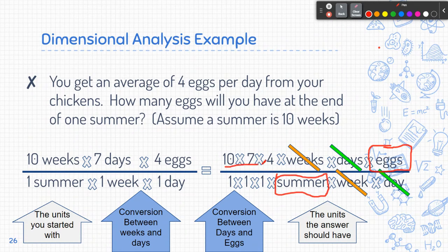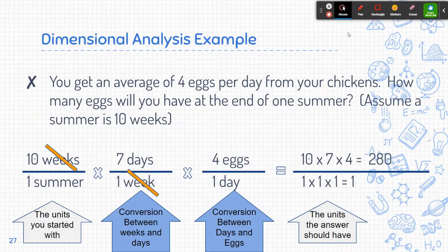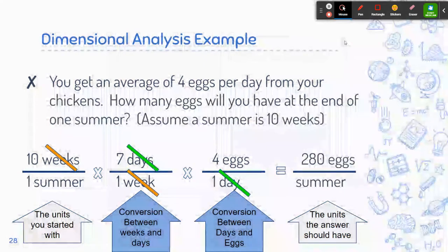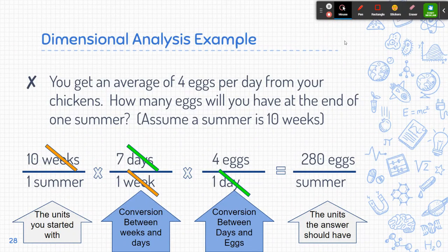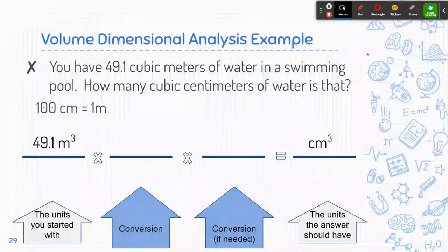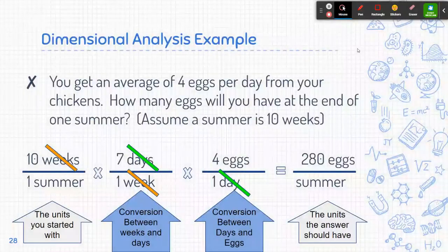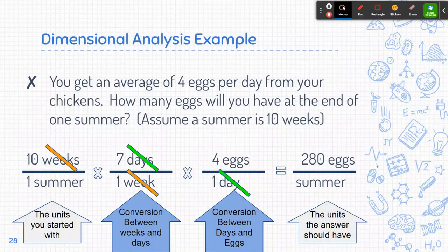So I can then multiply this out and I'm going to get a number and 1 times 1 is 1. So that'll be a 1 on the bottom. I can also leave it all spread out like this and cancel out the weeks and then cancel out days as I go along. Either way, it's exactly the same. And when I multiply that 10 times 7 times 4, I get 280 eggs. So that means that I end up with 280 eggs per summer.